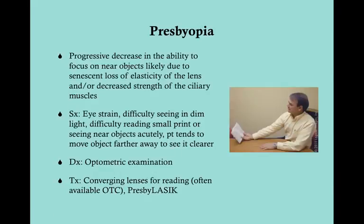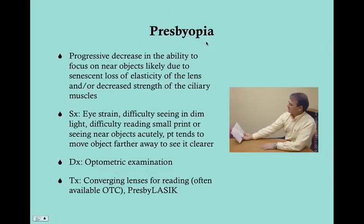Diagnosis of presbyopia can often be made clinically, but formally requires an optometric examination. Treatment is converging lenses - essentially a hyperopia situation where the lens can't become convex enough to project the image properly. A converging lens projects the image correctly onto the retina. These lenses are often available over the counter - the reading glasses sold at pharmacies and convenience stores are typically geared toward presbyopia. Prescription lenses are also available, and LASIK can be performed for presbyopia as well.